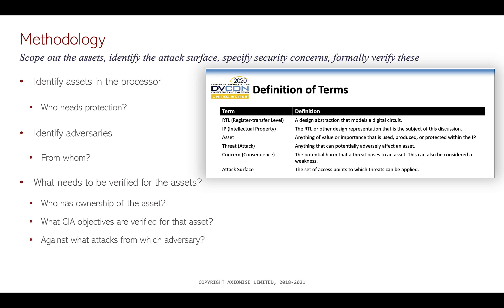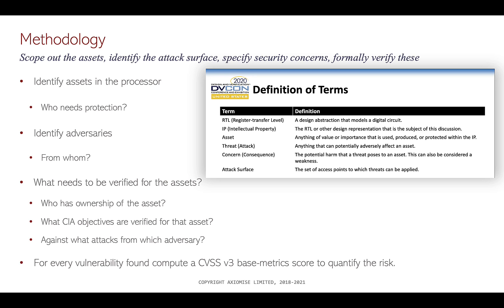Effectively, if you understand who has ownership of the asset, what CIA objectives — confidentiality, integrity, and availability — are verified for that asset, which ones are being impacted, and against what attacks from which adversary, then we can measure, check, evaluate, and say whether our assets are protected. For every vulnerability found, we compute a CVSS V3 base metric score to quantify the risk.